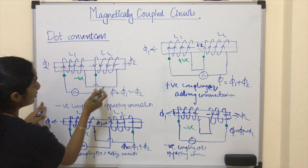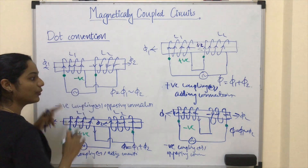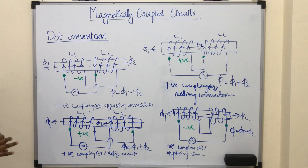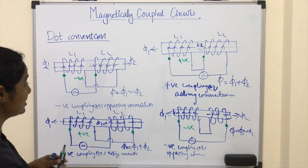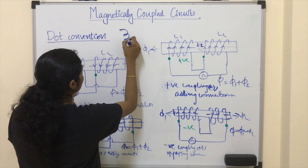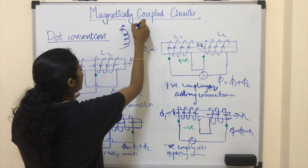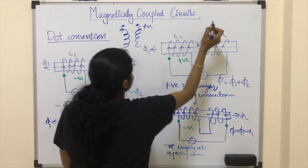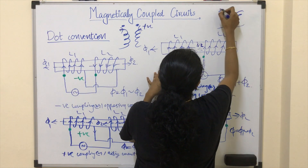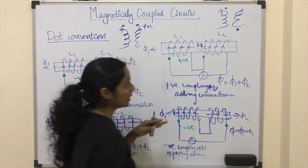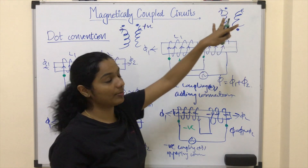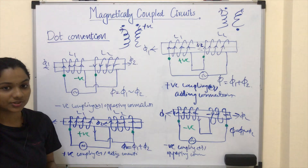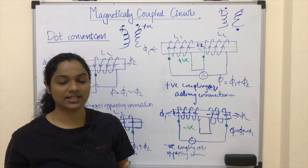These four figures are simplified and shown in the previous section. In general, when dots are marked on the entering side or leaving side of both coils, the mutual flux is taken as positive. If the current enters on one terminal and leaves on the other terminal of a coil, we consider it as negative coupling with the mutual flux as negative. I hope dot convention is clear to you. In the next lecture, we will proceed with equivalent inductance. Thank you.